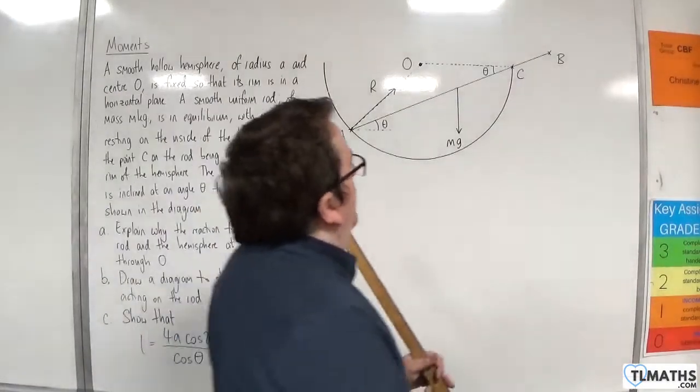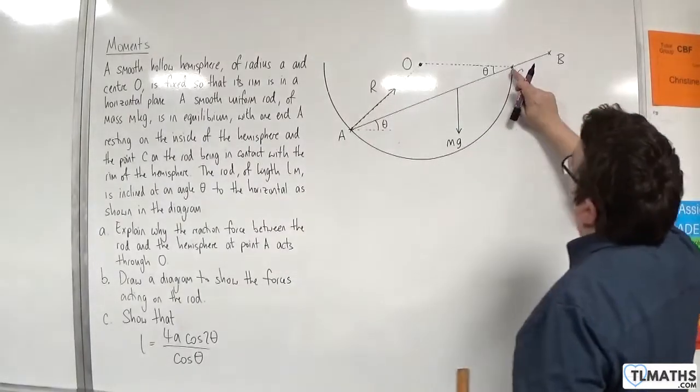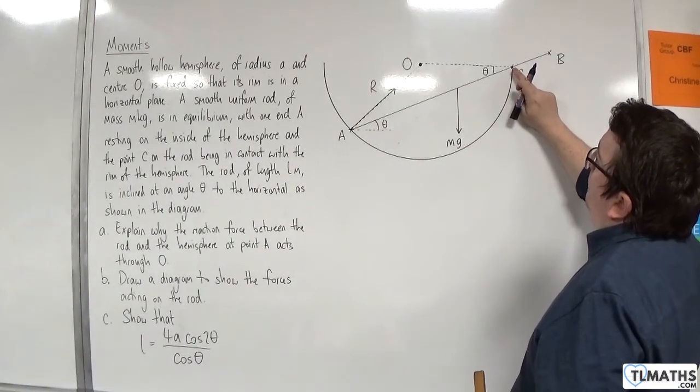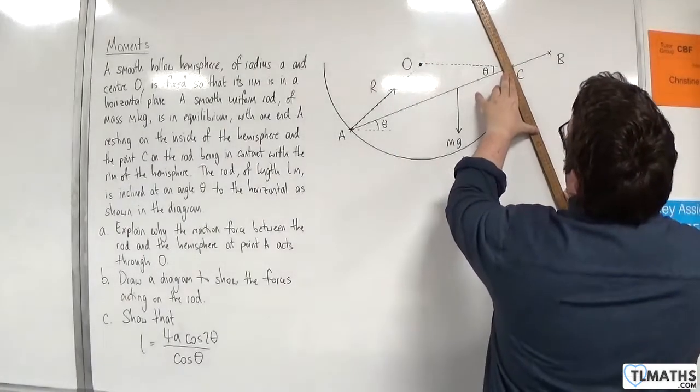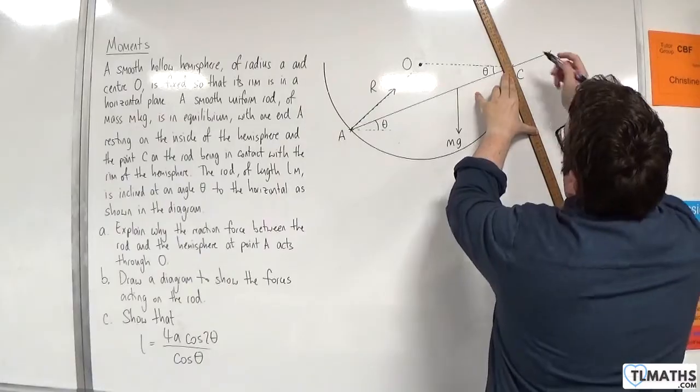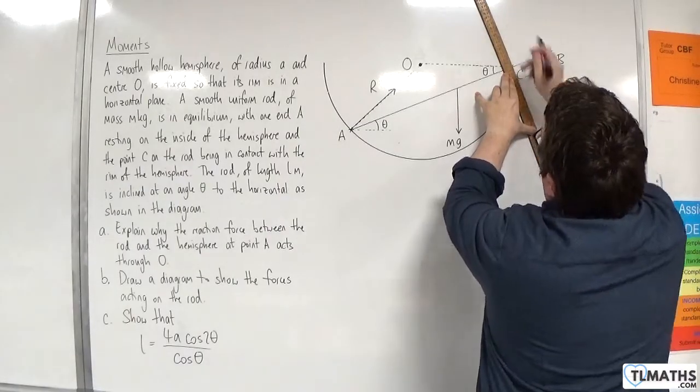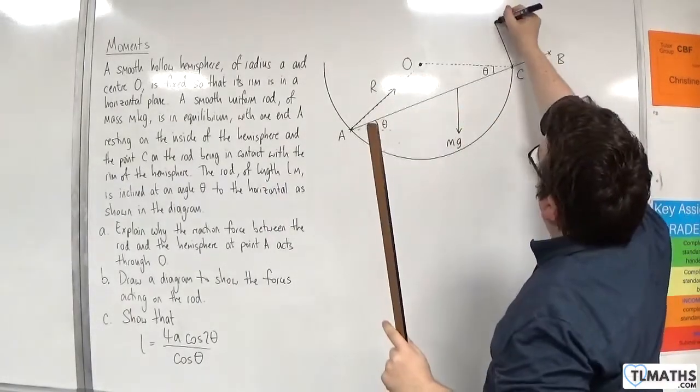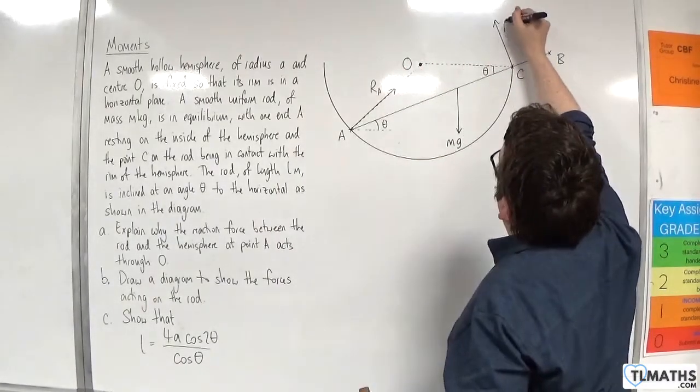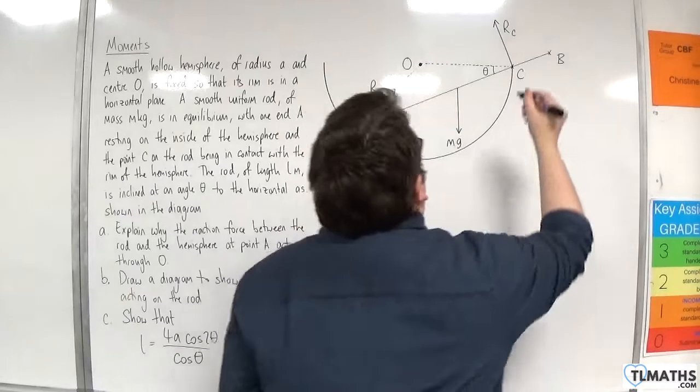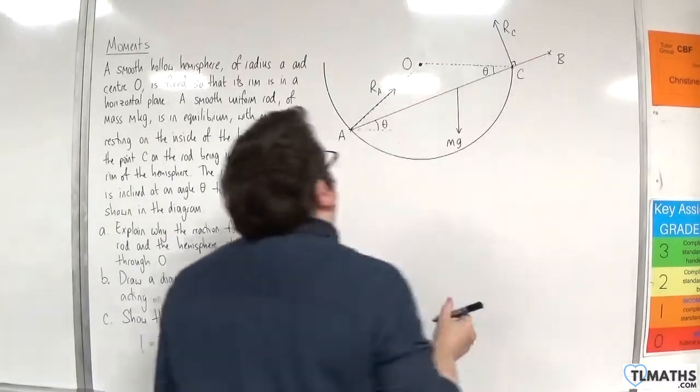And we'll also have a normal reaction force here at C because it's in contact with the rim. And that would be perpendicular to the rod. So we'll call that, well, I've used R there, so I'll call that RA and I'll call this RC. And that's perpendicular to the rod.